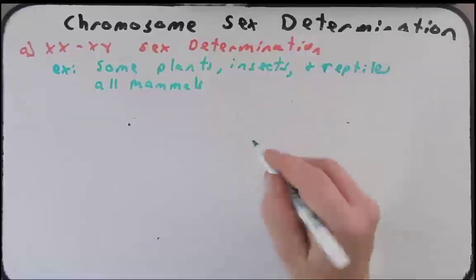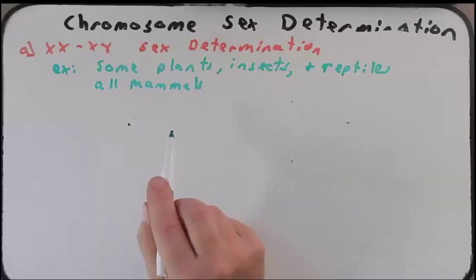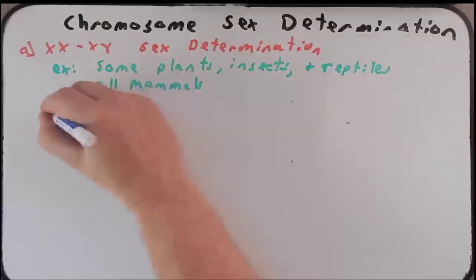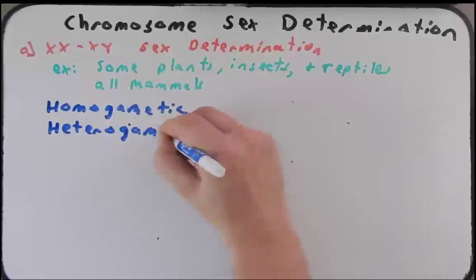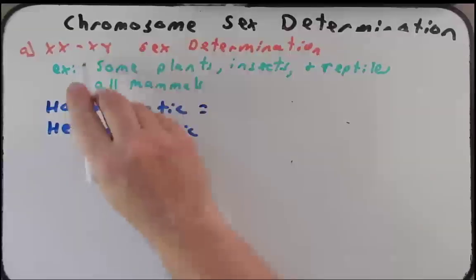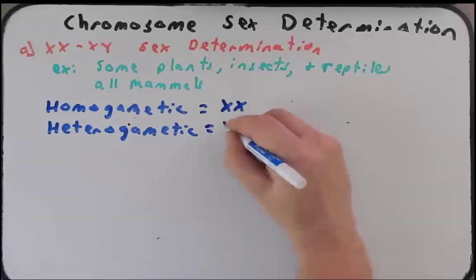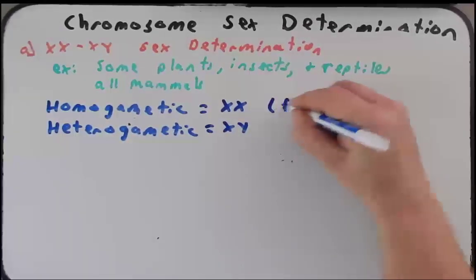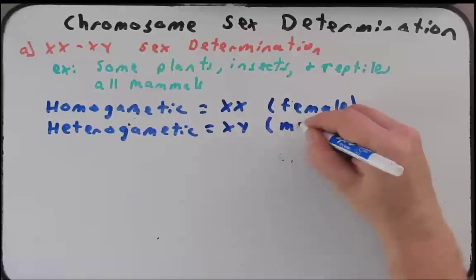Even in some extreme cases, the duck-billed platypus — which is a mammal — produces five pairs of X chromosomes and five pairs of XY chromosomes, but the duck-billed platypus always seems to do things a little differently. I want to introduce two terms: homogametic and heterogametic. In the XX/XY system, XX is the homogametic combination and XY is the heterogametic combination. XX individuals are usually female and XY — the heterogametic individuals — are usually male.